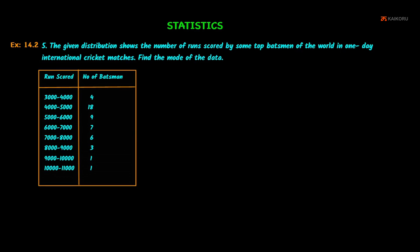So you can find the mode of the data. You can find the details. One-day international cricket matches, top batsmen scores. The first column is run score. The second column is number of batsmen. So you can find the score of batsmen - that runs varying from 3,000 to 4,000.